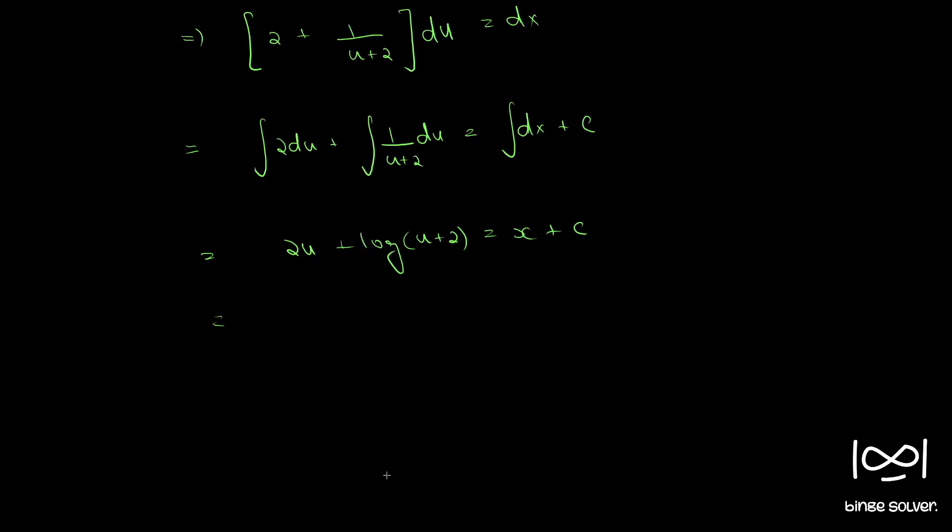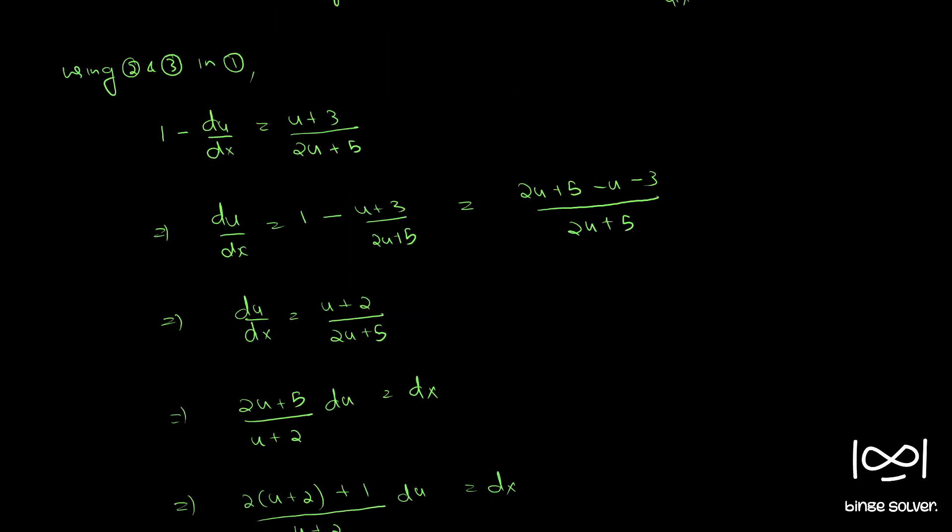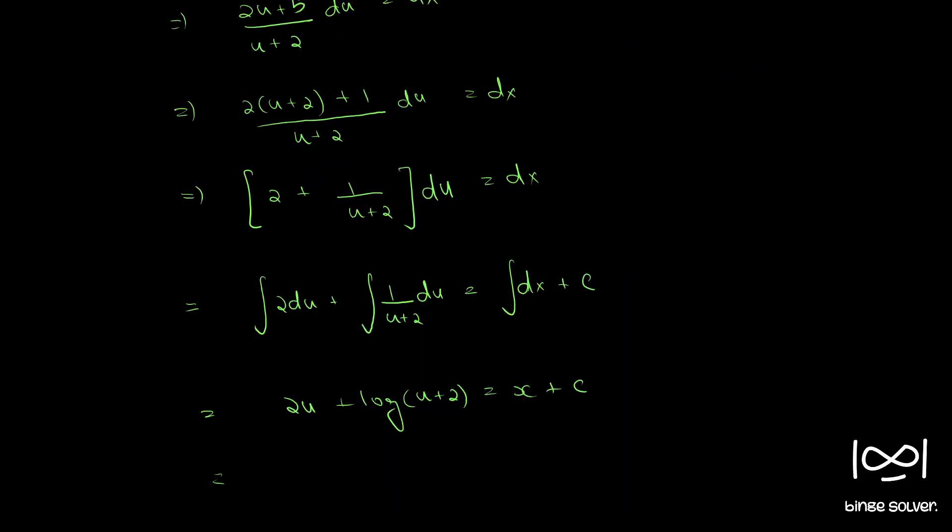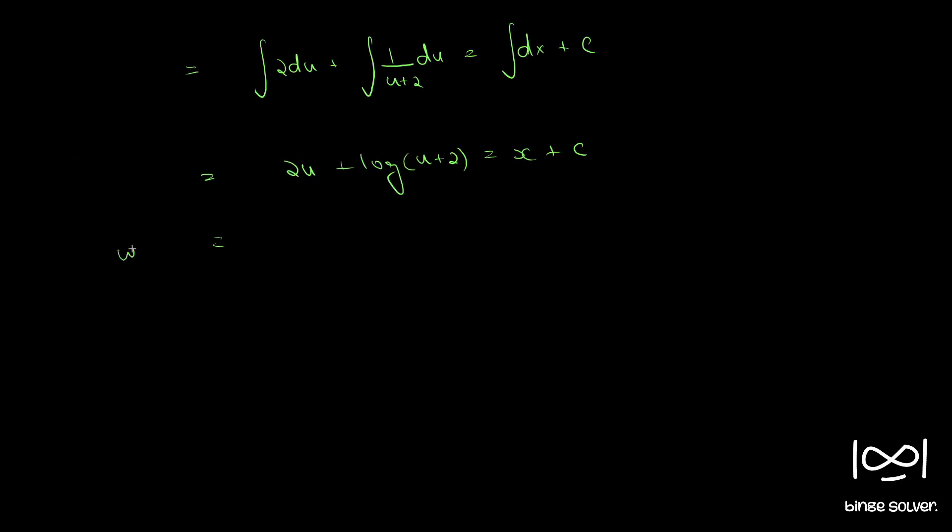So, from equation 2, we get, from equation 2, x minus y is equal to u. So, using 2, we get 2 into x minus y plus log x minus y plus 2 equal to x plus c.